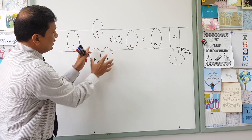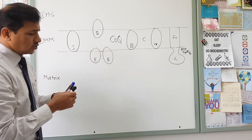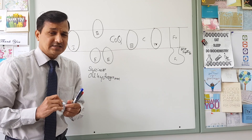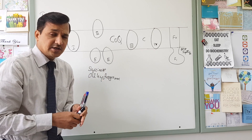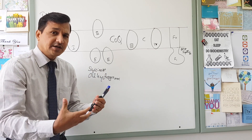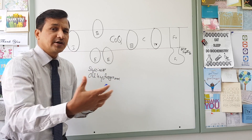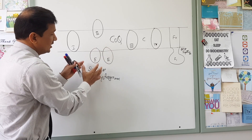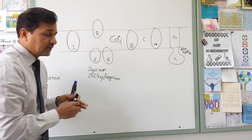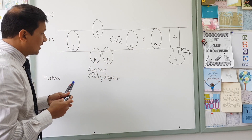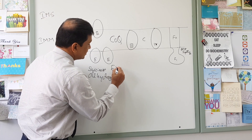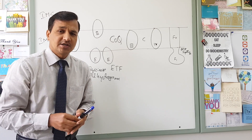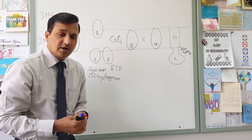Complex 2 has three members. The first is succinate dehydrogenase, which is part of the TCA cycle — the enzyme where FAD enters the reaction, succinate is converted to fumarate, FAD is converted to FADH2, and that FADH2 enters Complex 2. Succinate dehydrogenase is attached to the inner side of the inner mitochondrial membrane itself. The second Complex 2 is electron transferring flavoprotein (ETF), which is part of beta oxidation of fatty acids.